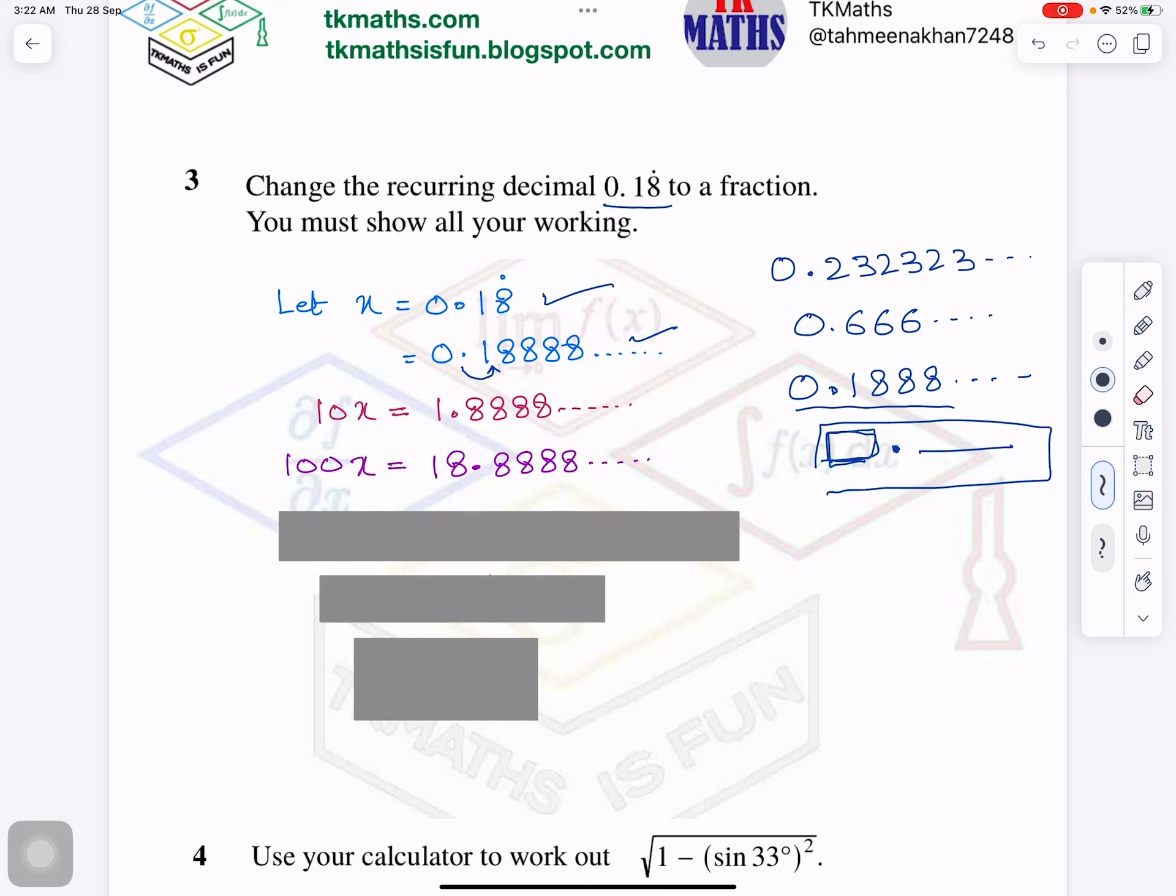So when I am multiplying by 100, what will happen? This decimal will jump two places to the right. You know how to change decimal into another number when multiply by 10, 100, and 1000. So now when I multiply by 100, this decimal will go here. So I got 18.8888.